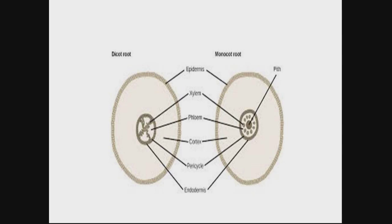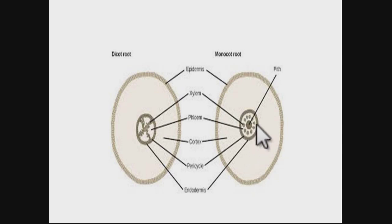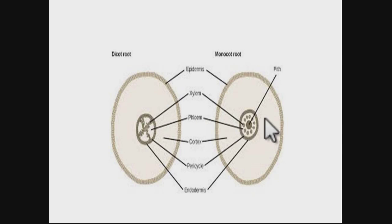In both dicot and monocot roots the endodermis is well-defined with Casparian strips — suberin deposition forming bands. The number of proto xylem groups: in dicot root the number of vascular bundles is generally less than 6, while in monocot root it is more than 6. In dicot root secondary growth is present, whereas in monocot root there is no secondary growth.